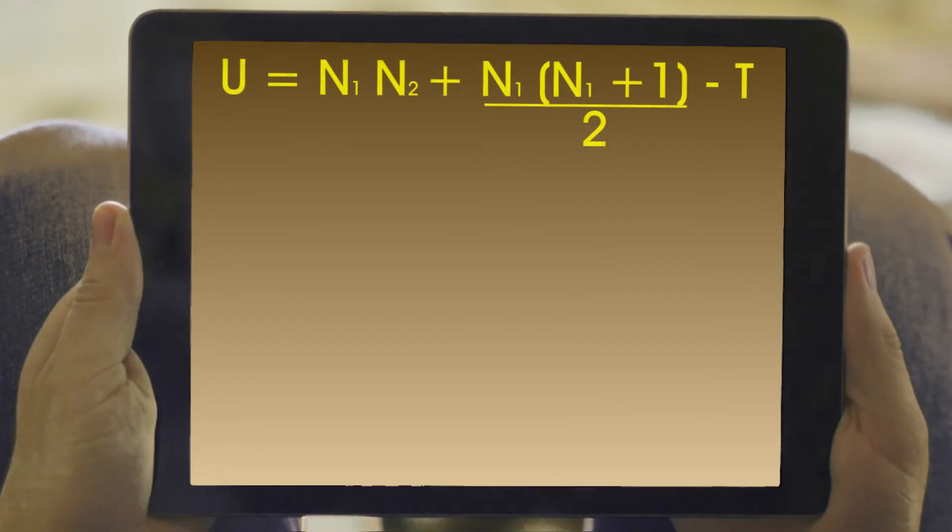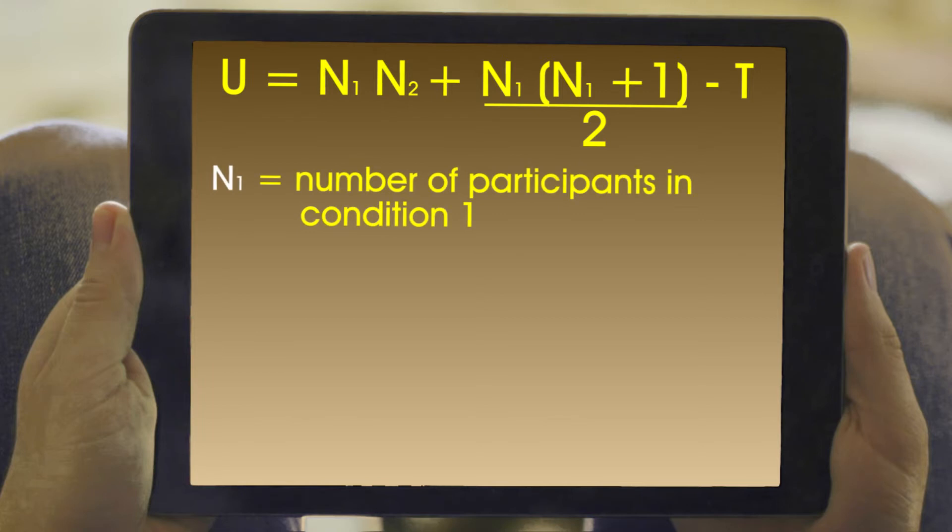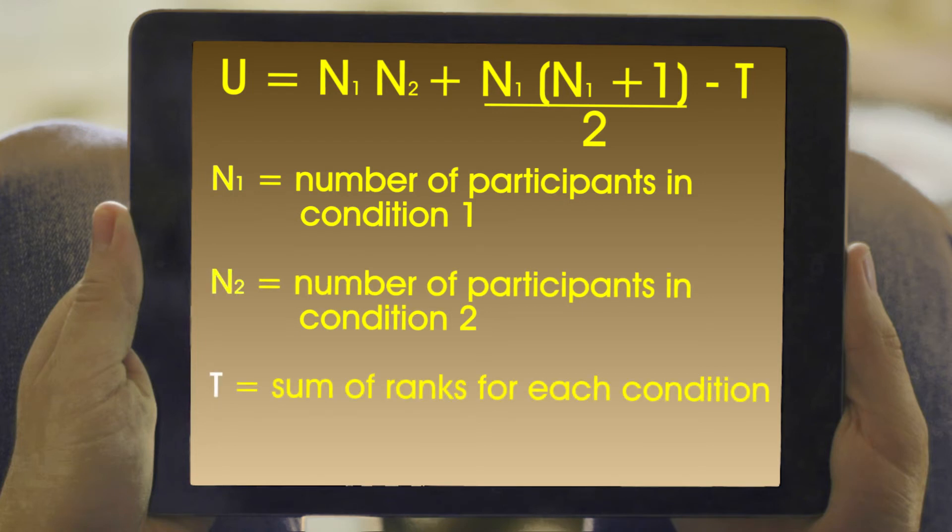The formula for the Mann-Whitney U test is displayed on screen. In this formula, N1 is the number of participants in condition 1 and N2 the number in condition 2. T is the sum of the ranks for each condition which we are going to calculate, and U stands for the Mann-Whitney statistic.